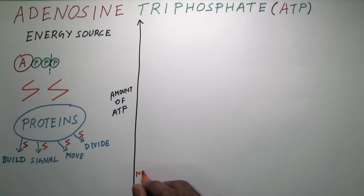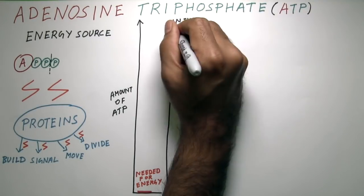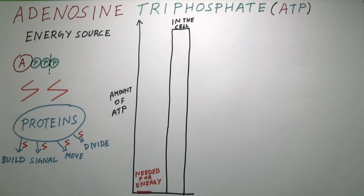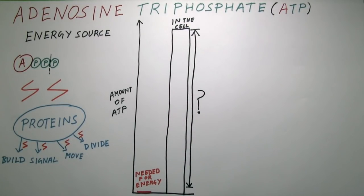Although these different jobs require a lot of energy, it turns out that there is about 100 times more ATP in a cell than it needs for energy. Making ATP is costly, so why would cells make so much more of this valuable molecule?